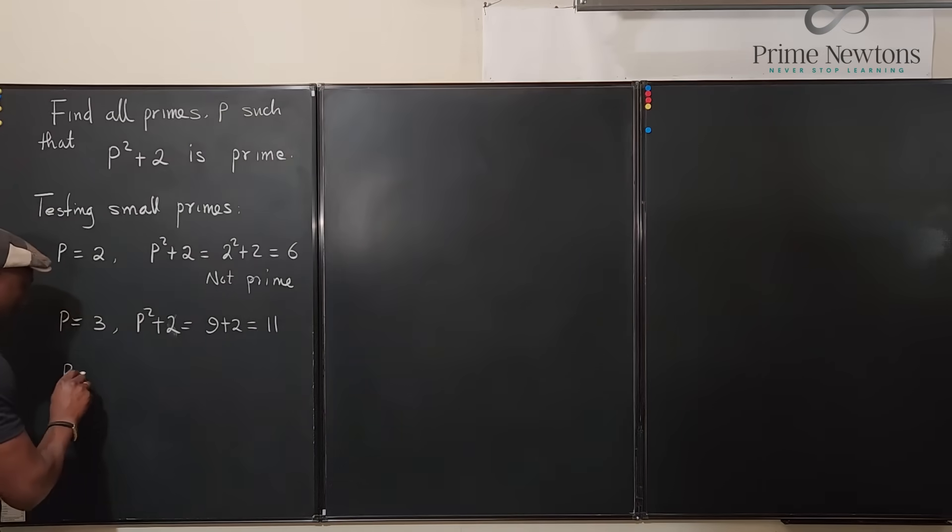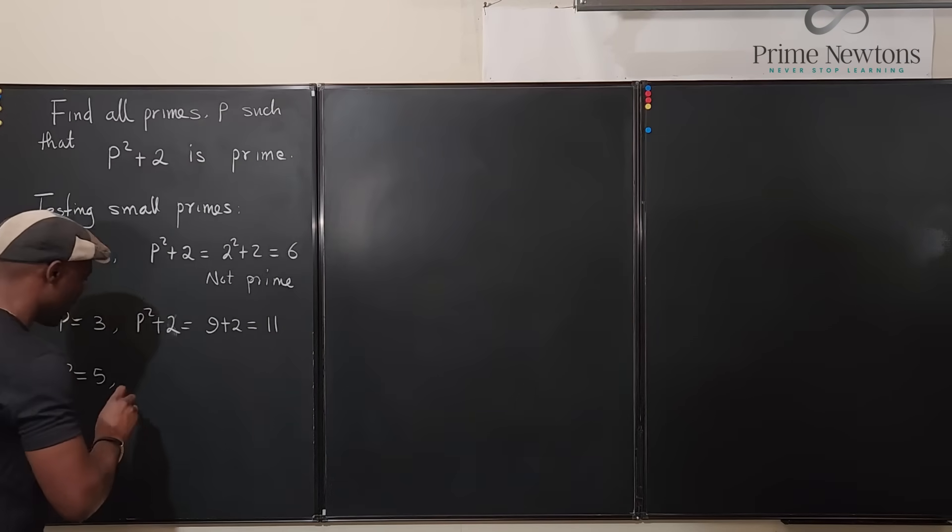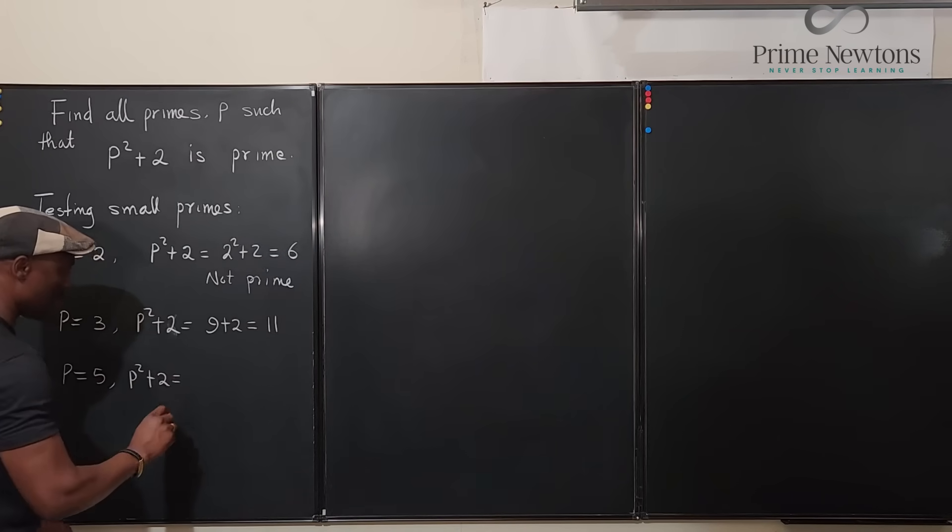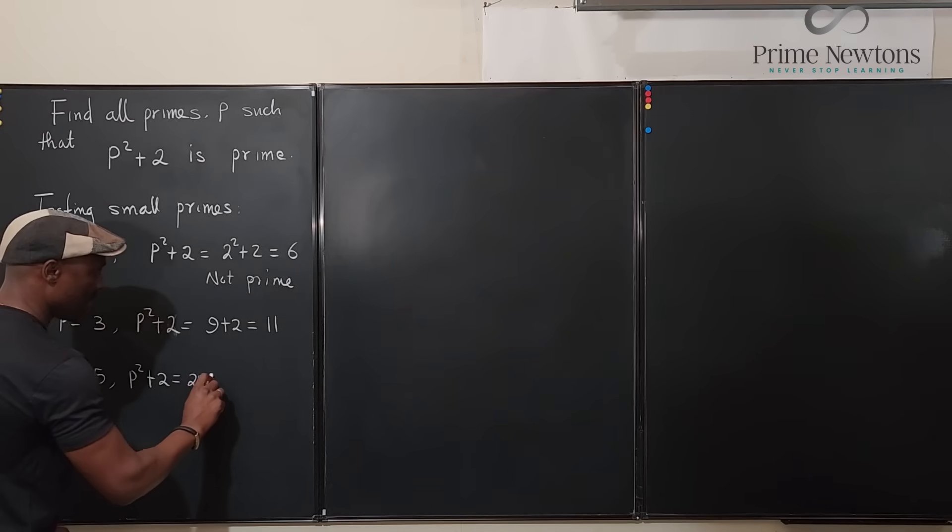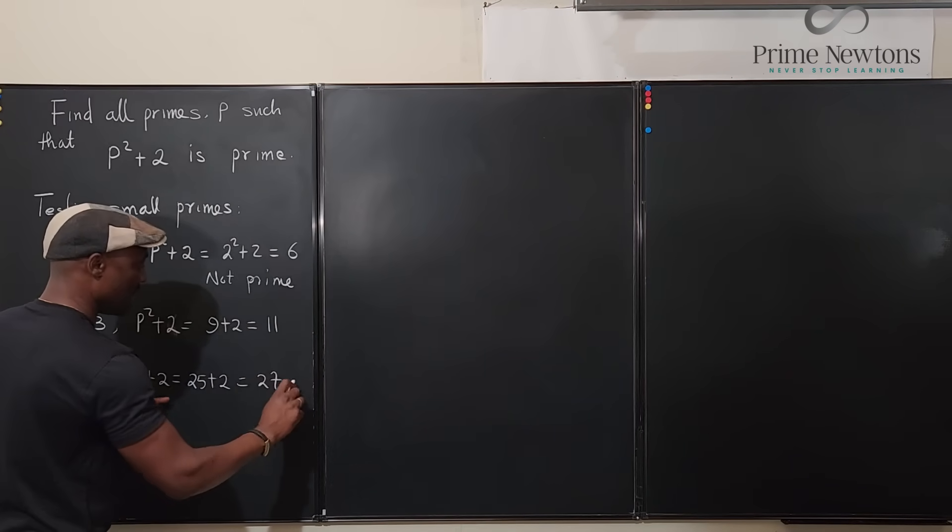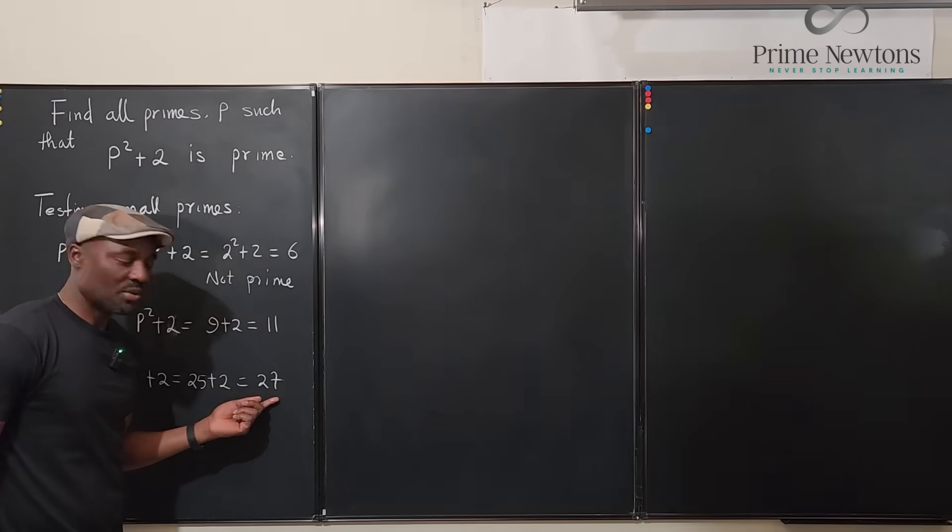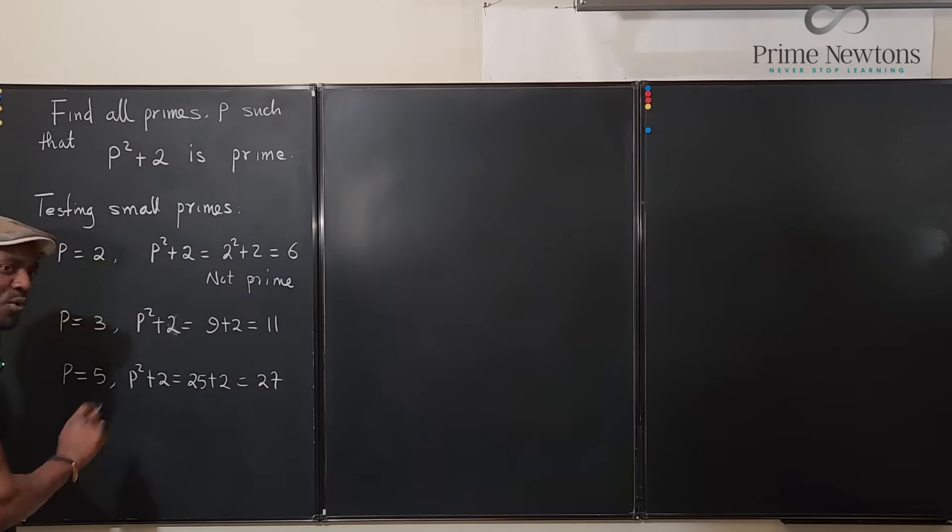Let's go to p equals 5. We know that p squared plus 2 will be equal to 25 plus 2 which is 27. 27 is not a prime number.